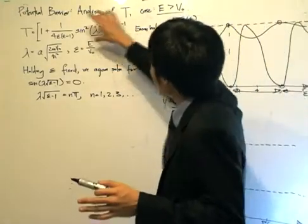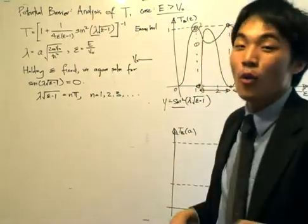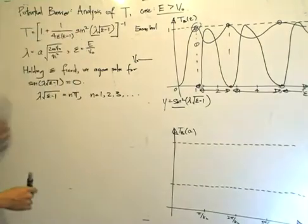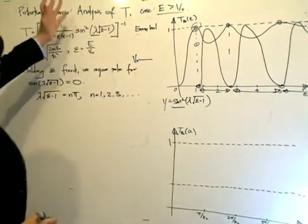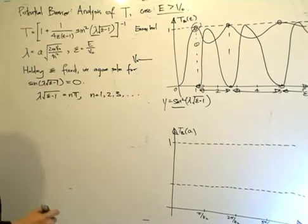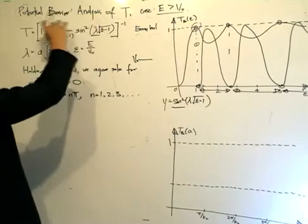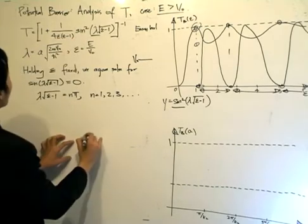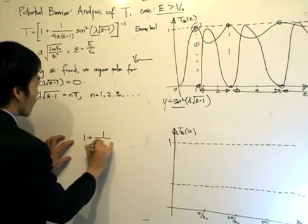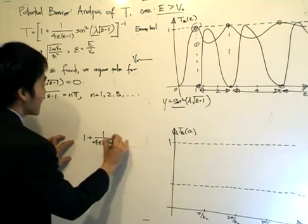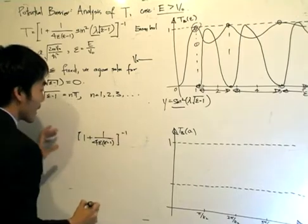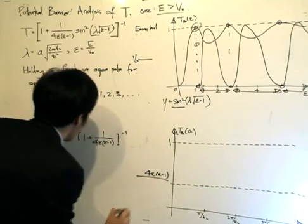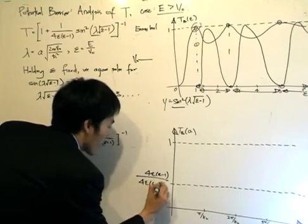Before I proceed, I again want to find the maximum and minimum values of the transmission coefficient. Sine is bounded between minus 1 to 1, so sine squared is bounded between 0 and 1. It's no surprise that the maximum value equals 1 — when sine squared equals 0, we get 1. The minimum value occurs when I get 1 divided by the biggest denominator, so I maximize this by letting it equal 1, giving 1 plus 1 divided by 4 epsilon times epsilon minus 1, raised to the power of minus 1.